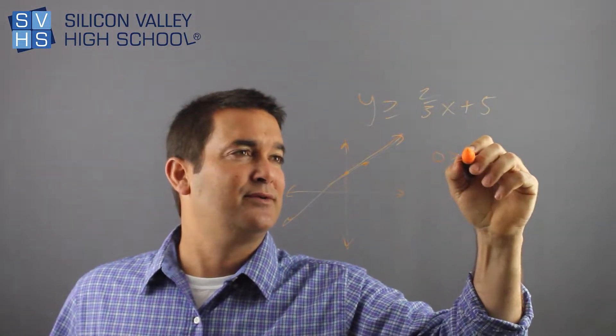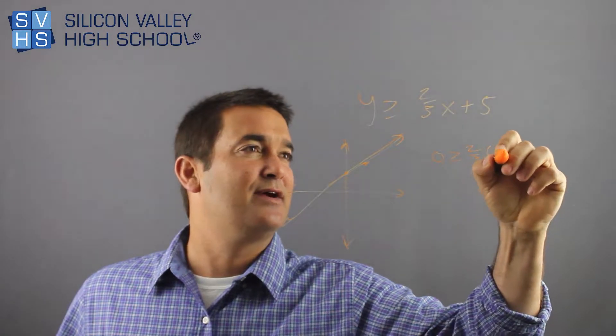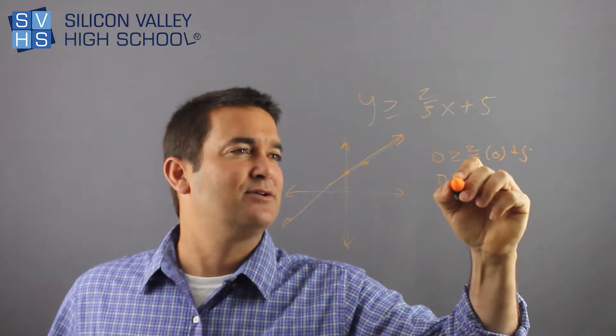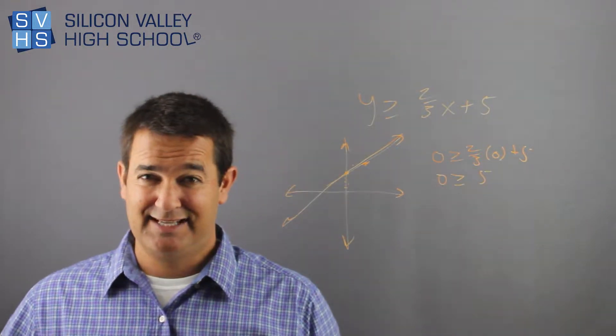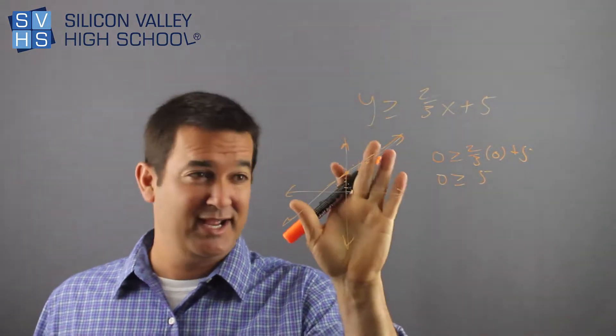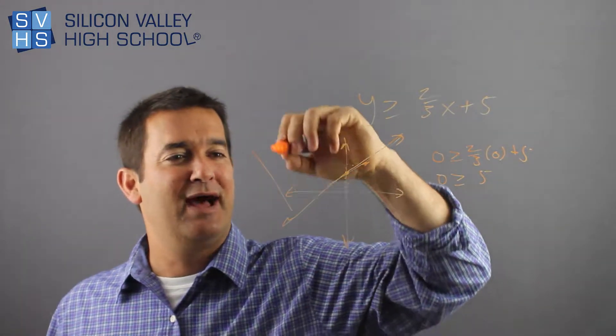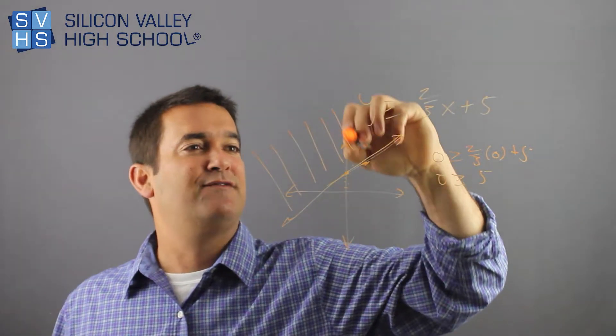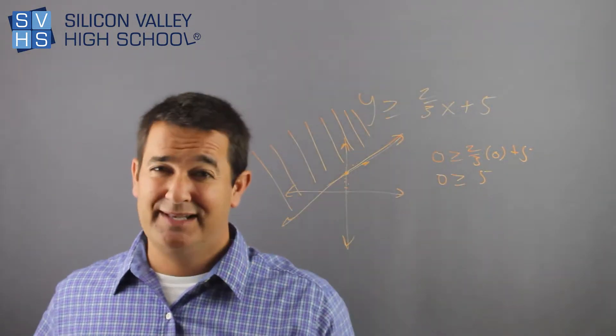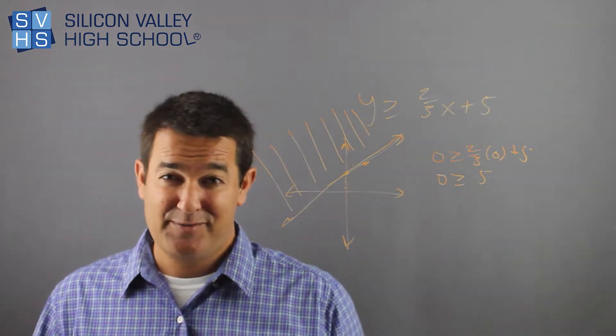Zero for y, zero is greater than or equal to two-thirds times zero for x plus five. Is zero greater than or equal to five? And since the answer is no, you do not shade this whole region, you shade the other region because that must be correct, and then you would have this shading up here. So your final graph would be this solid line because it's inclusive and it would be shaded above. That's the official way.